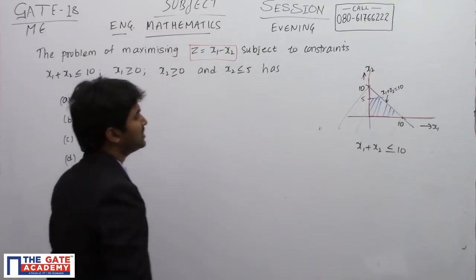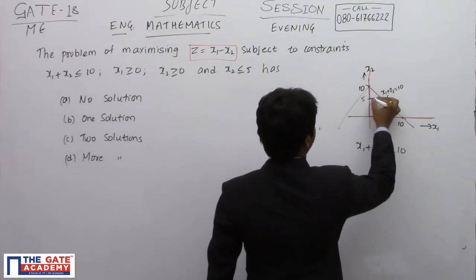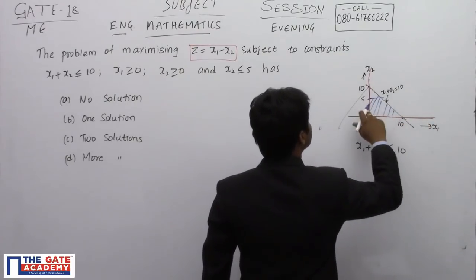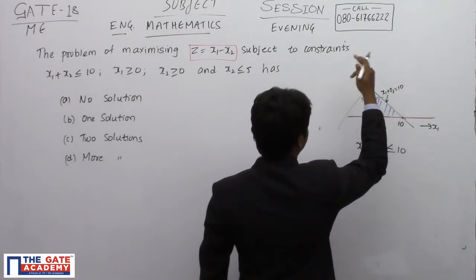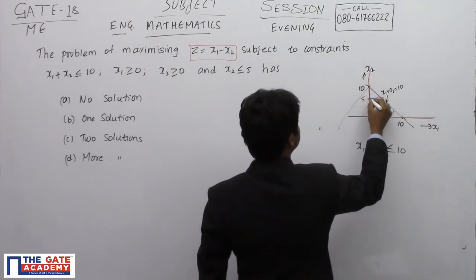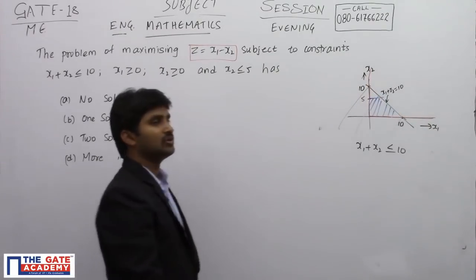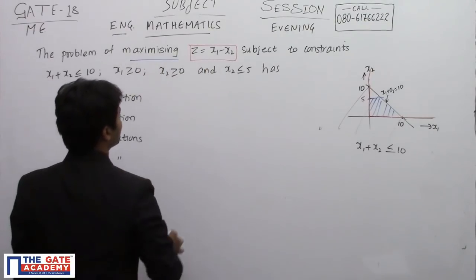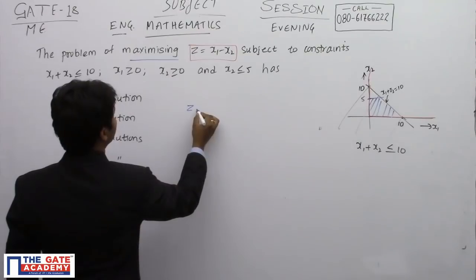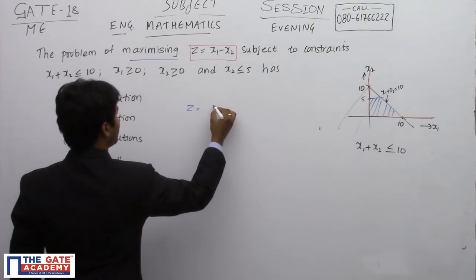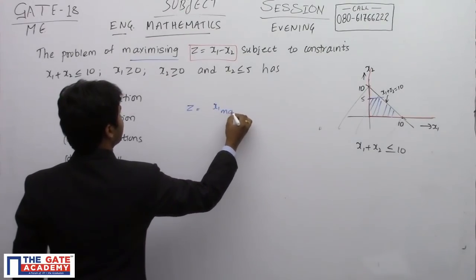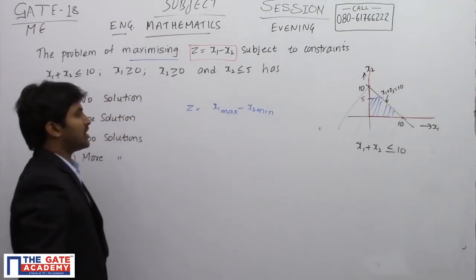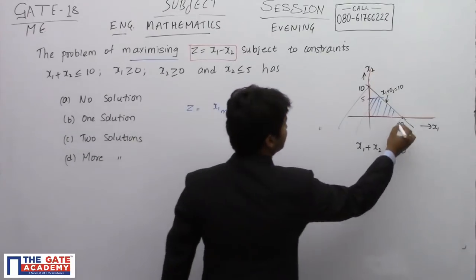This is the feasible region satisfying x1 plus x2 less than or equal to 10, x1 greater than or equal to 0, x2 greater than or equal to 0, and x2 less than or equal to 5. Now, when will z have a maximum value? Z equals x1 minus x2 will be maximum when x1 is maximum and x2 is minimum.